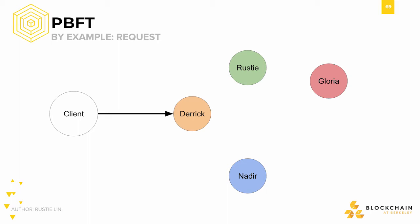We have a total of four nodes, meaning that we should be able to withstand one fault, since one-fourth is less than one-third. So let's say that one of our four nodes, Nadir, drops out due to a spotty internet connection. Nadir might have dropped out, but the other three nodes might not know that yet, so they'll still send messages to him.